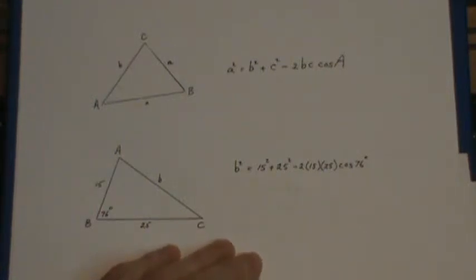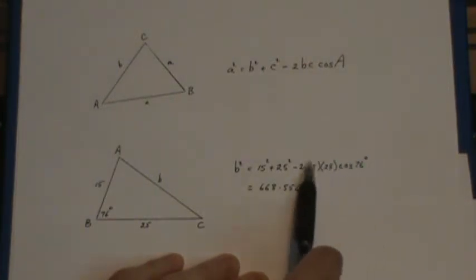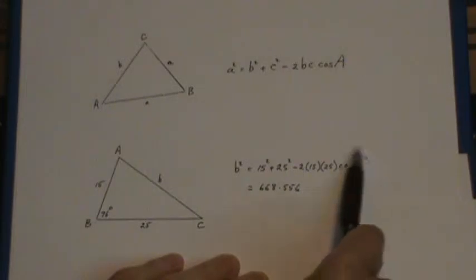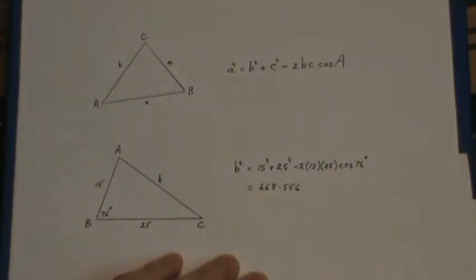Now if you're using a scientific calculator, you can do all of this in one step on your calculator. It does order of operations, so you will be subtracting all of this, that's giving you this answer. And then all you have to do is take the square root of that to give you side b.